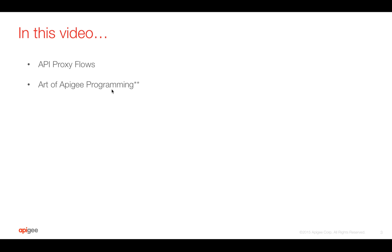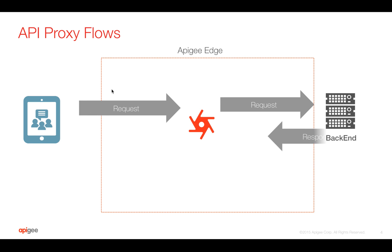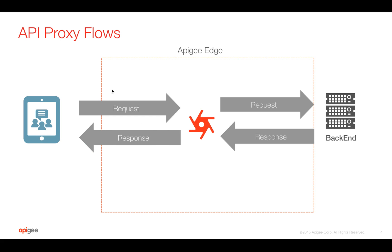We are going to see how API Proxy Flows works in Apigee Edge and the art of Apigee programming. API Proxy Flows is one of the most interesting concepts and one of my favorites in Apigee Edge. Apigee Edge sits in between the client and the backend, where the API flow goes through Apigee Edge. But internally, there are a lot of things that happen before the request reaches the backend or the response reaches the client.